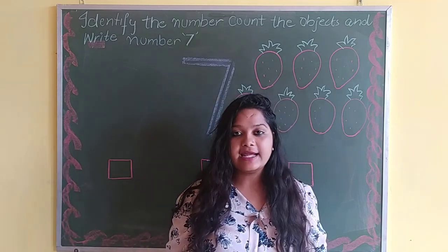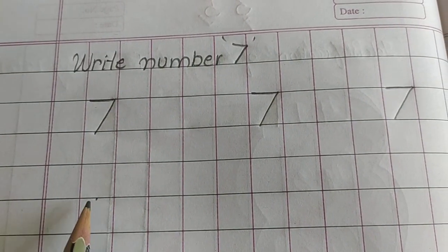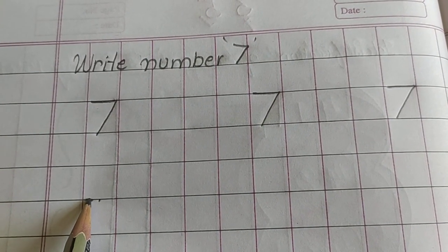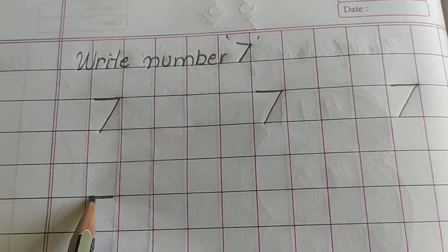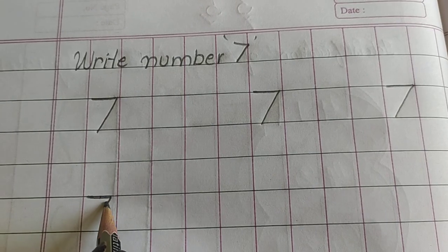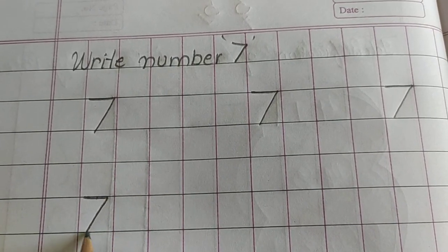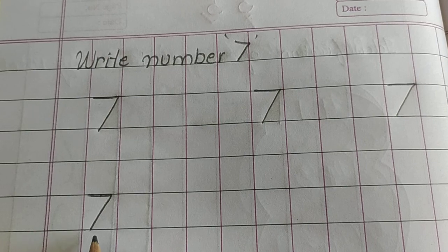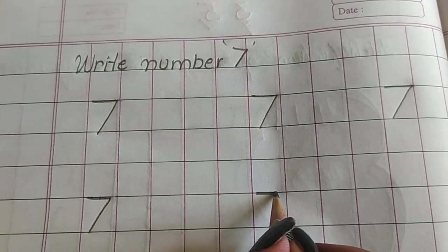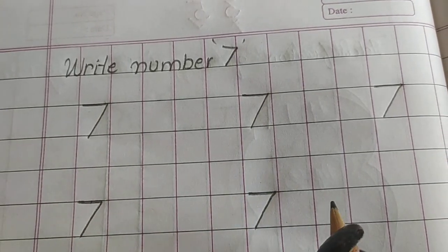Now we will write number 7 in the notebook. Number 7. Now we will make a slanting line like this. Number 7. 7 — slipping line, then slanting line.